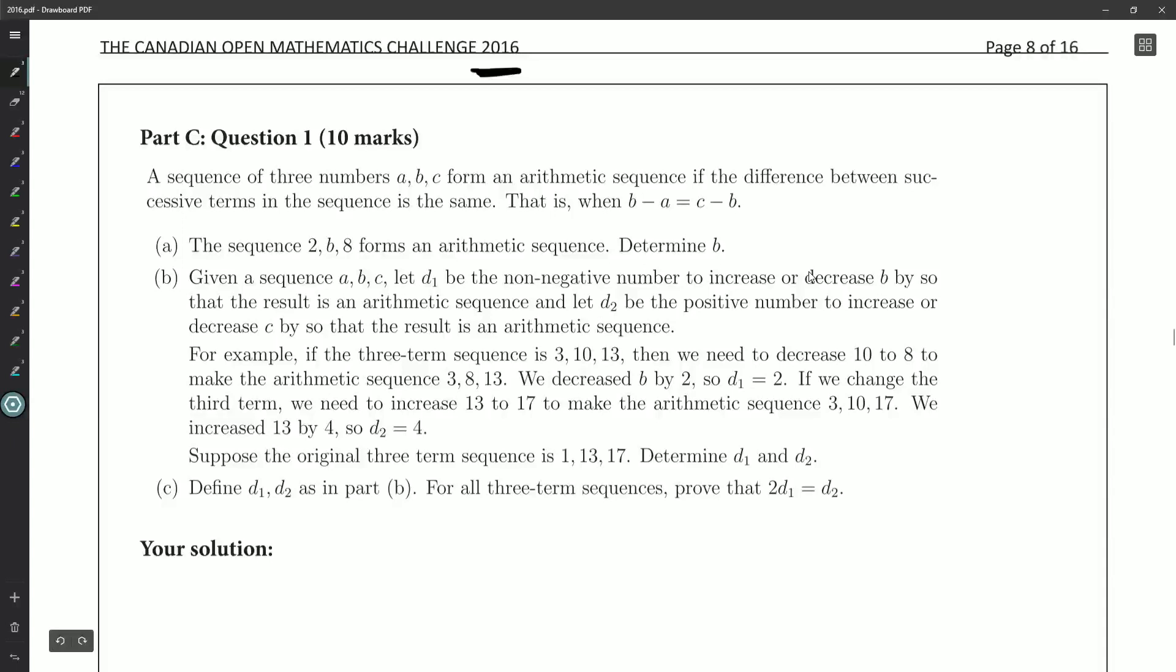So C1 is what we're looking at. A sequence of three numbers A, B, C forms an arithmetic sequence if the difference between successive terms in the sequence is the same. That is, when B minus A is equal to C minus B. Usually I prefer to write the sequence as A, A plus D, A plus 2D, and so on, but maybe they're giving this form for a specific reason. D is usually what's called the common difference. Arithmetic sequences, just like geometric sequences, they pop up from time to time. They are a good thing to know on contests. They are a great go-to when making up problems.